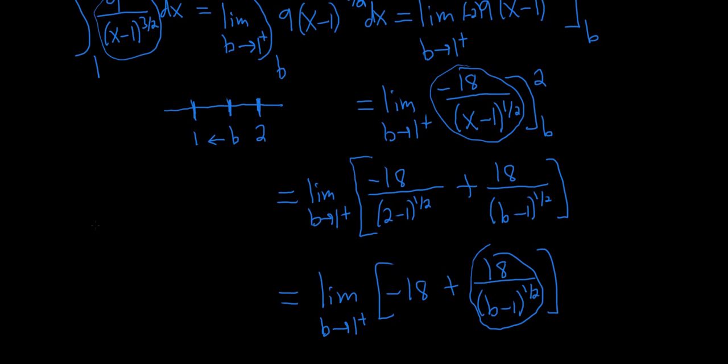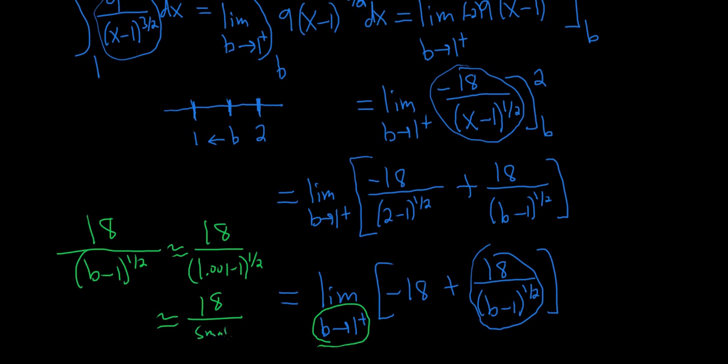So if you recall from a long time ago maybe we had limits like this. Usually in like calculus 1 you study these. So we have 18 over and then we have b minus 1 to the 1 half. So what's happening is that b is approaching 1 from the right. So think of a number that's really close to 1 bigger. So that's an easy way to think about it. So this is roughly 18 over like 1.001 minus 1 to the 1 half. I'm just picking any number close to 1 just so you can try to visualize what happens. Remember b is changing. b is getting really close to 1. So you have 18 over something small and that's big.